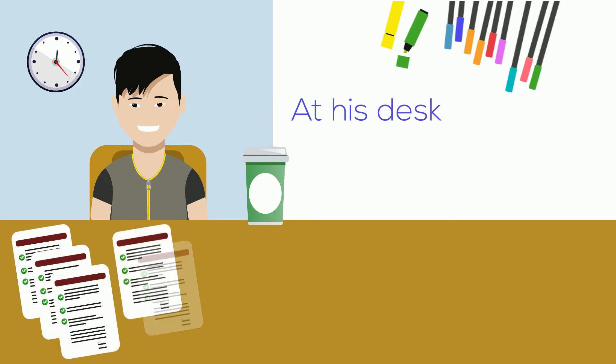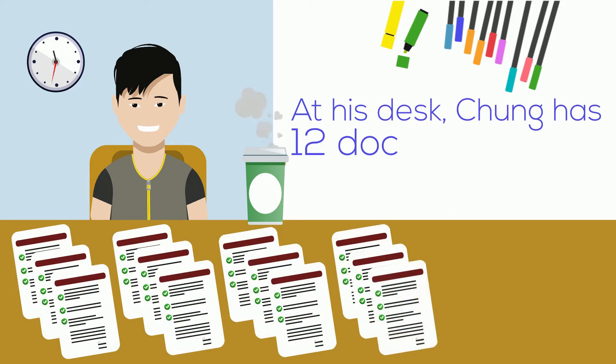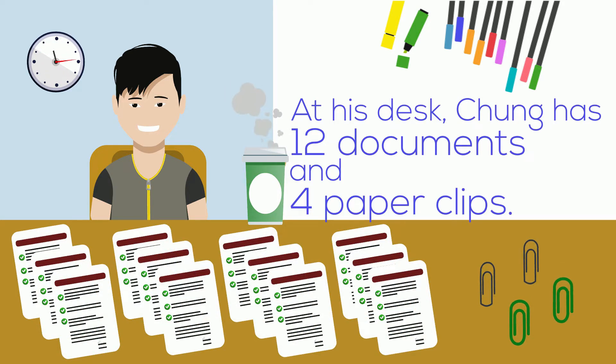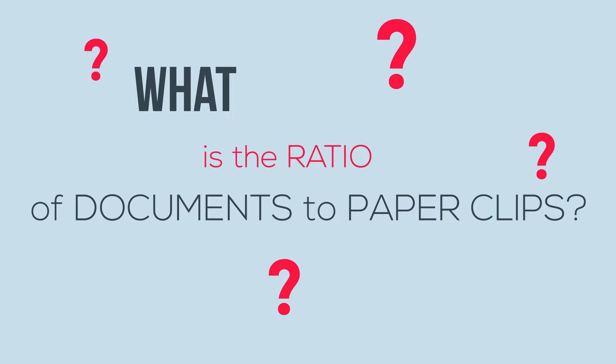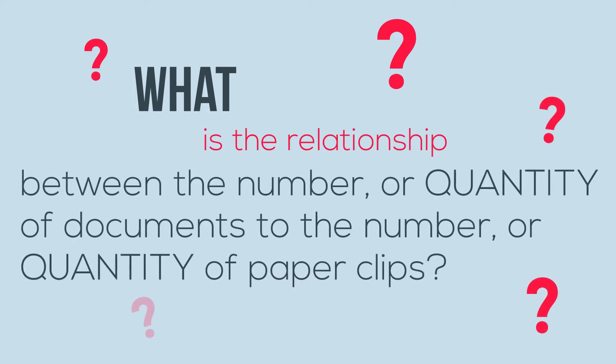Chung needs to organize his desk. He has 12 documents and 4 paperclips. So, what is the ratio of documents to paperclips? In other words, what is the relationship between the number of documents to the number of paperclips?